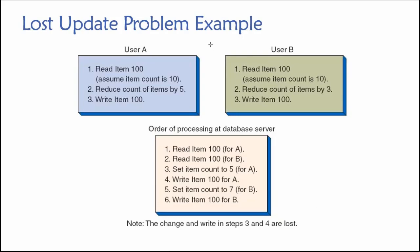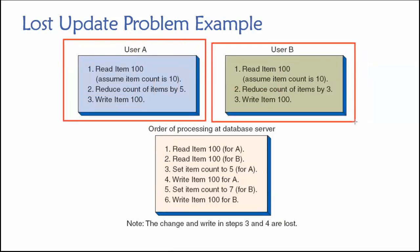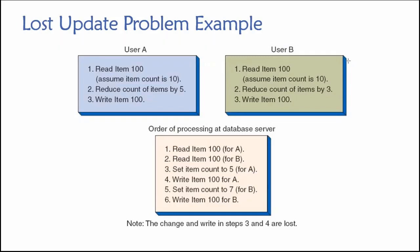Because we don't have concurrency control mechanisms in place, the changes user A made have been lost — and the only reason this happened is because two users were trying to work with the same data at the same time. Hopefully through this simple example you can understand why concurrency control is a big deal. We need ways of preventing these kinds of problems to enjoy the benefits of a multi-user database environment and keep our values accurate. This only arises when we're in a concurrent user situation.